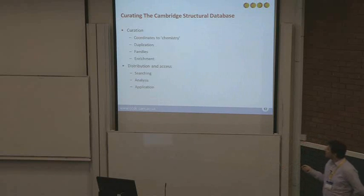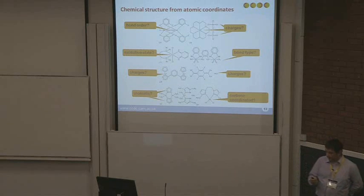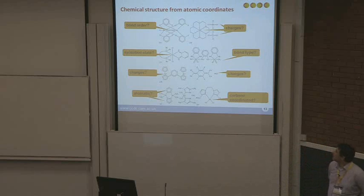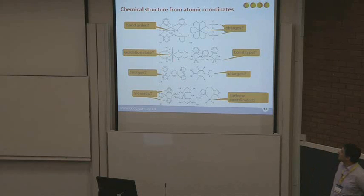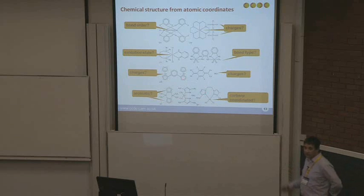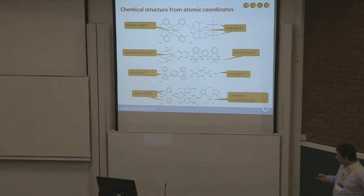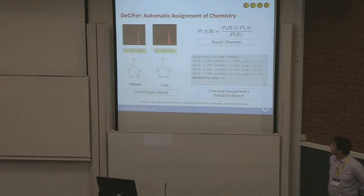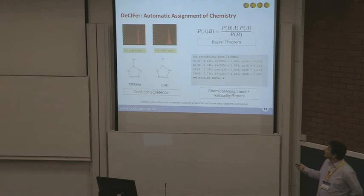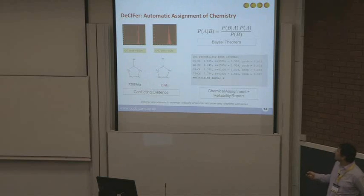Our main challenge is to take coordinates and turn them into chemistry. It's challenging. From coordinates, it's very difficult to determine bond order, oxidation state, understand the charges of a molecule, or whether things should be denoted as an aromatic system. These are difficult to do computationally. We've developed a system called Decipher, which combines geometric information from our molecules with information from observations in the CSD, and allows us to come up with an assignment of the most probable chemistry represented in a particular CIF file.